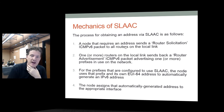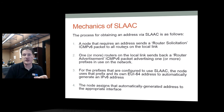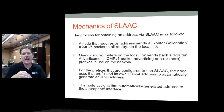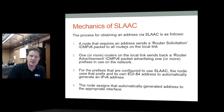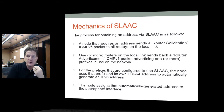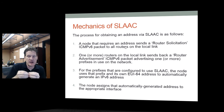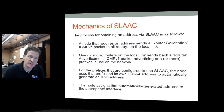Here's the SLAAC process in steps. A node sends a router solicitation (an ICMPv6 packet) to all routers on the local link. One or more routers respond with a router advertisement advertising the available prefix. For prefixes configured to use SLAAC, the machine takes its EUI-64, automatically generates the IPv6 address, appends it, and assigns it to the appropriate interface.